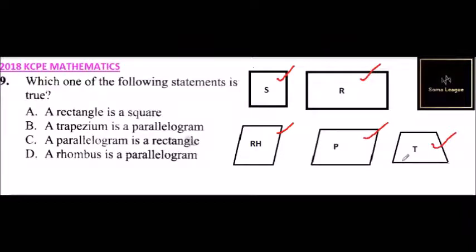So if you go through statement A, a rectangle is a square. A rectangle cannot be a square because the sides of a rectangle are—the length is, we have the length and the width, but all the sides of a square are equal. So we cannot say that that is true.